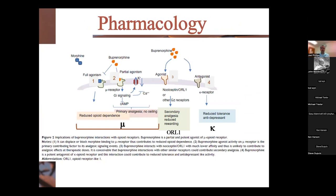To review the receptor summary: at the mu receptor we get primary analgesia with no ceiling effect and reduced opioid dependence. At the ORL1 receptor, we get a secondary analgesic effect as well as that reduced reward system. And with the kappa system, we see reduced tolerance and that antidepressant effect.